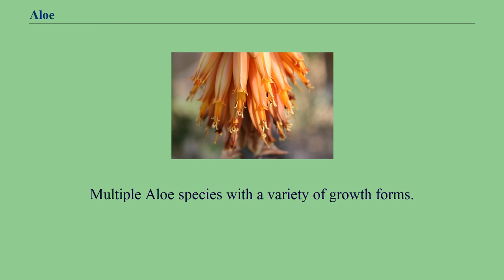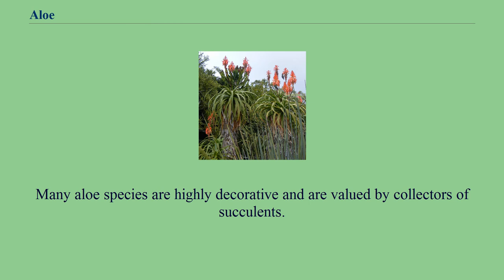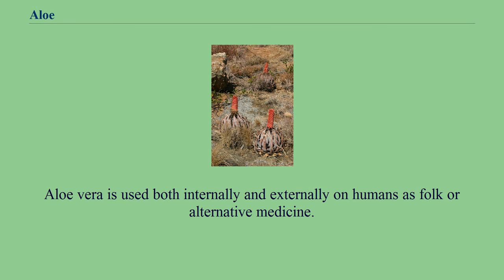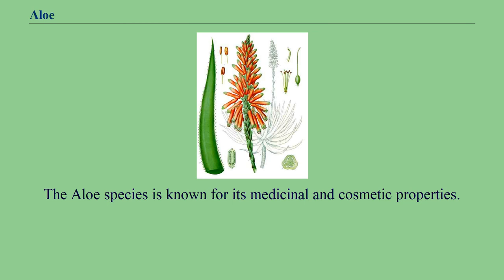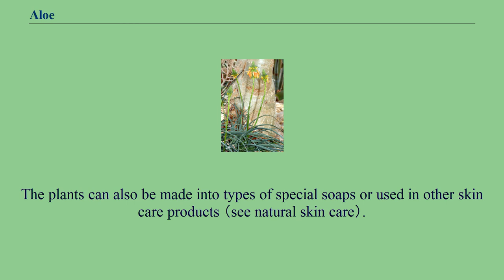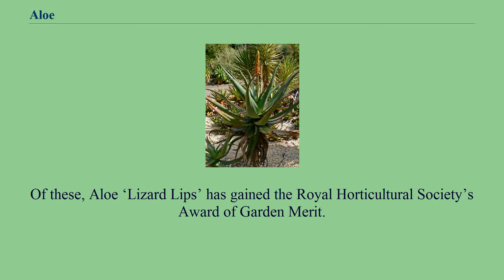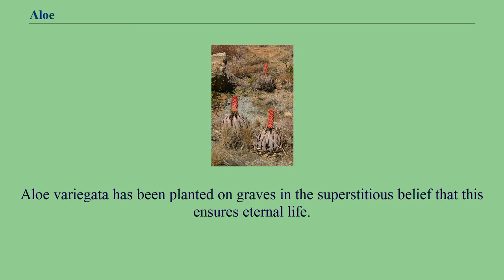Multiple aloe species with a variety of growth forms are frequently cultivated as ornamental plants both in gardens and in pots, as seen at the UCLA Botanical Garden. Many aloe species are highly decorative and are valued by collectors of succulents. Aloe vera is used both internally and externally on humans as folk or alternative medicine, and around 75% of aloe species are used locally for medicinal purposes. Aloe lizard lips has gained the Royal Horticultural Society's Award of Garden Merit. Aloe variegata has been planted on graves in the superstitious belief that this ensures eternal life.